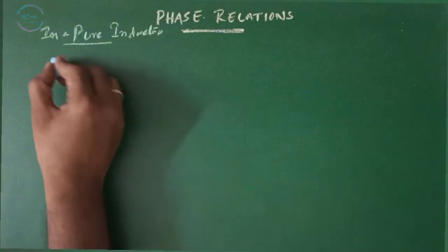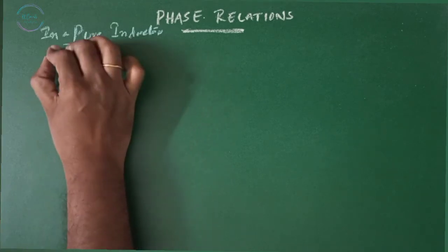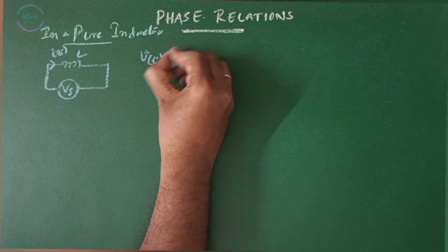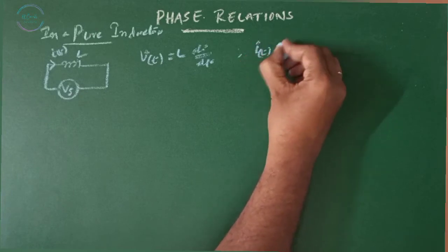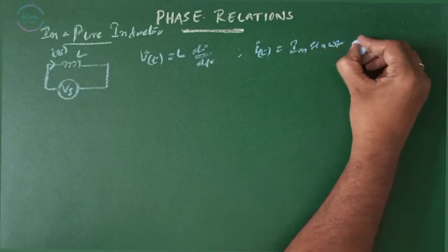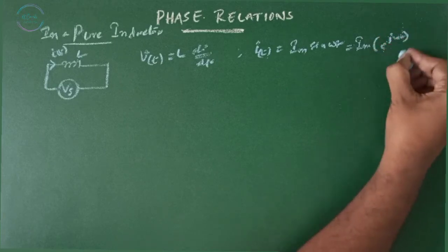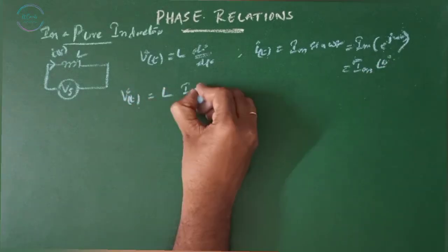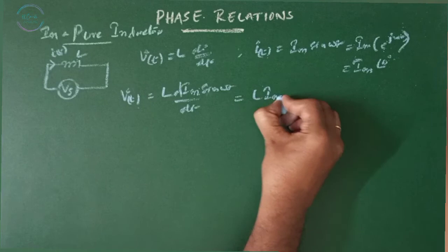In the case of a pure inductor, when an inductor is connected to an AC voltage Vs, the current flowing through it is I(t) and we know the relation V(t) = L·di/dt. Then we have I(t) = Im·sin(ωt), or in imaginary terms Im{e^(jωt)}, or Im∠0°. So V(t) = L·d/dt[Im·sin(ωt)], where Im is constant (the maximum value).